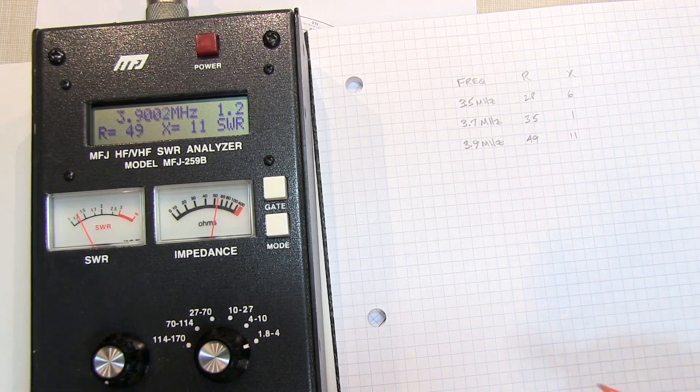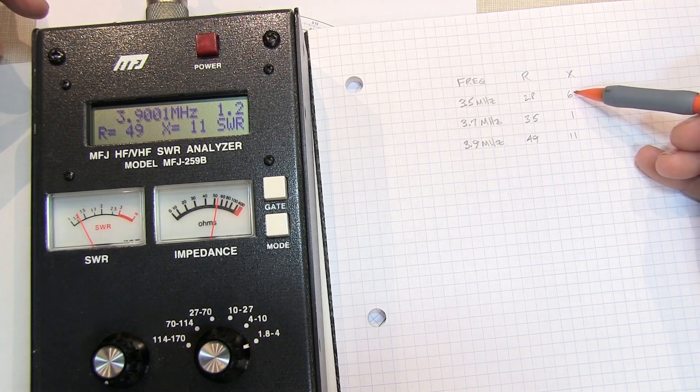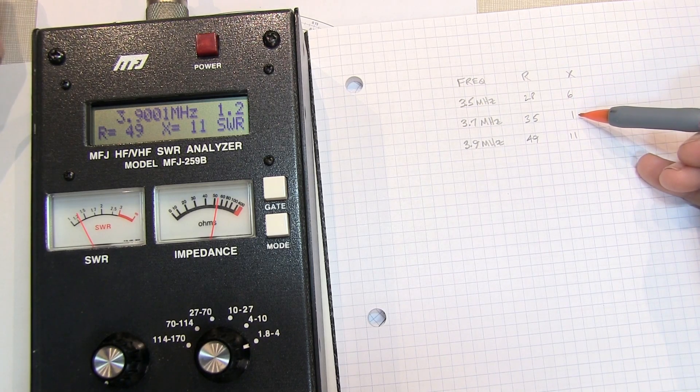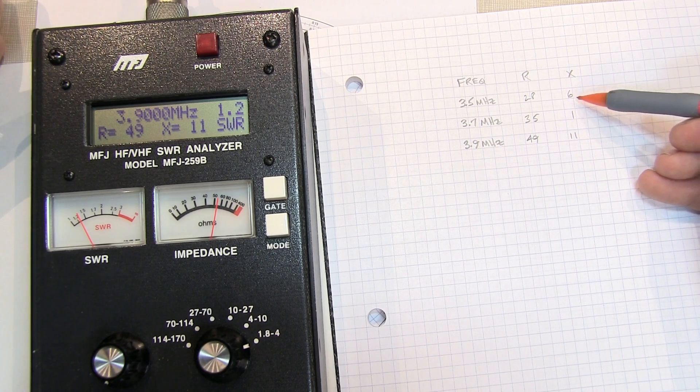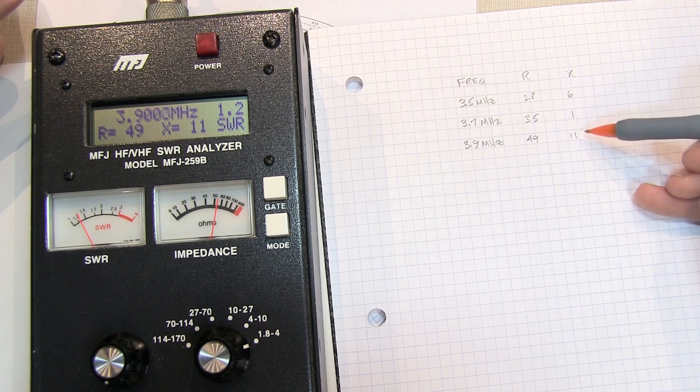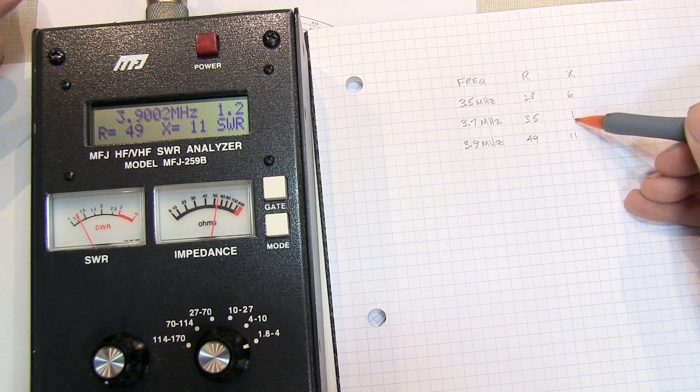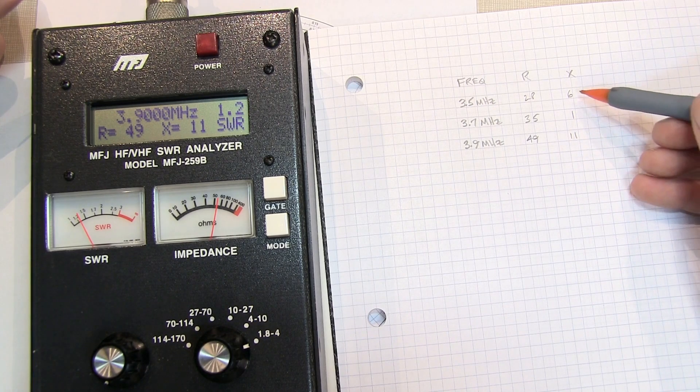Now you'll notice that the X value went from some value down very close to 0 and then back up again. And that's going to be now your indication that you may have changed polarities between one end or the other. Now this one could be plus or minus, but it's so close to 0 that it probably doesn't matter.